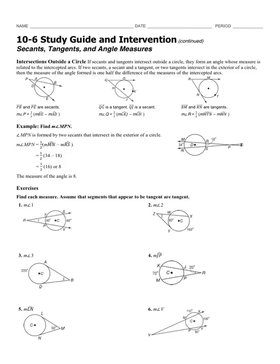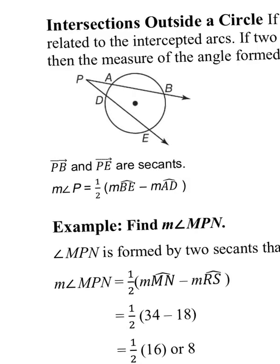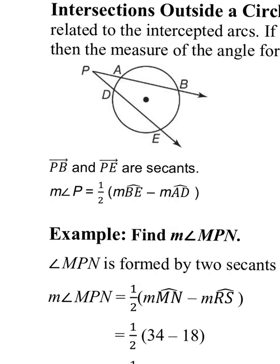If secants and tangents intersect outside a circle, you can either have two secants, two tangents, or one of each intersecting outside the circle. They form an angle whose measure is related to those intercepted arcs. If two secants, a secant and a tangent, or two tangents intersect in the exterior of the circle, then the measure of the angle formed is one half the difference of the intercepted arcs. That's exactly the same as dividing by two.